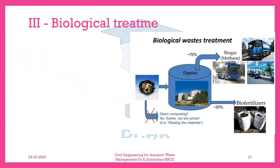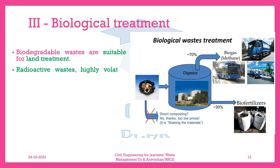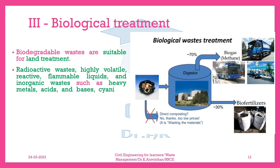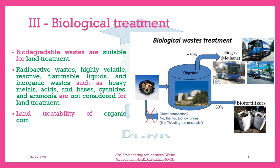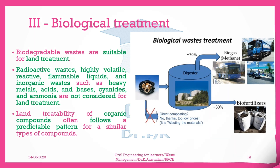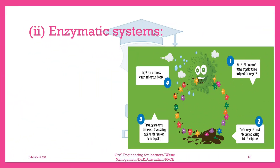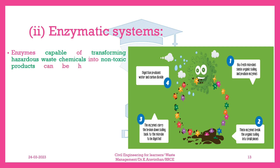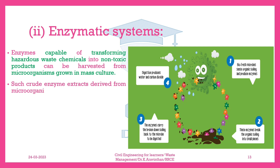Biological treatment. Biodegradable wastes are suitable for land treatment. Radioactive wastes, highly volatile, reactive, flammable liquids, and inorganic wastes such as heavy metals, acids, bases, cyanides, and ammonia are not considered for land treatment. Land treatability of organic compounds often follows a predictable pattern for similar types of compounds. Enzymatic systems: enzymes capable of transforming hazardous waste chemicals into non-toxic products can be harvested from microorganisms grown in mass culture. Such crude enzyme extracts derived from microorganisms have been shown to convert pesticides into less toxic and persistent products.